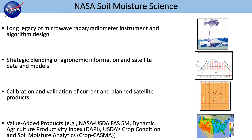NASA has a long legacy of microwave radar and radiometer instrument and algorithm design. In the top right figure you see a truck-mounted instrument — these were done as a test bed for future satellite-based sensors. The next figure is a demonstration of a strategic blending of agronomic information and satellite data and models, taking satellite-based observations and merging them with in-situ observations. This can be done for calibrating and validating current and even planned satellite products, increasing the fidelity of the in-situ network as well as the satellite-based products.